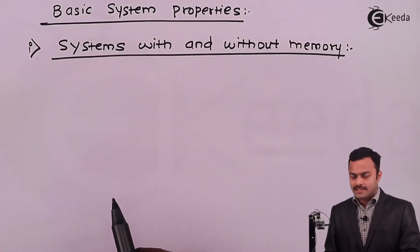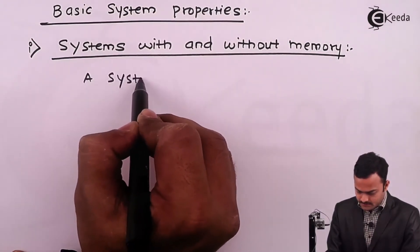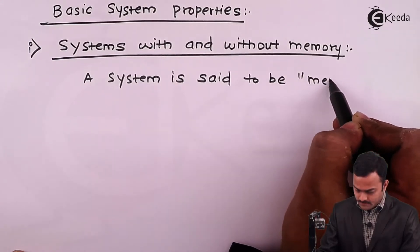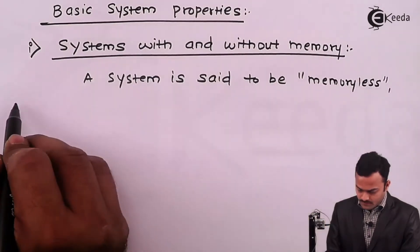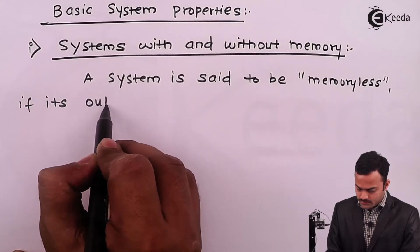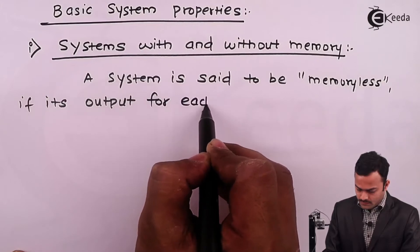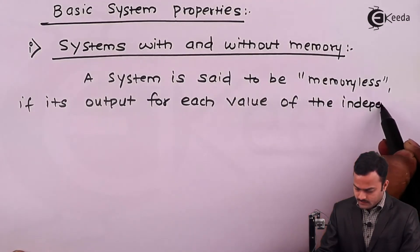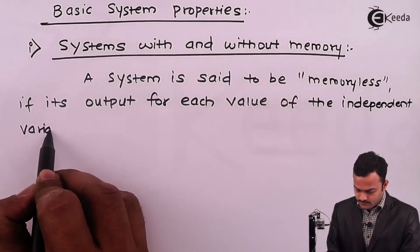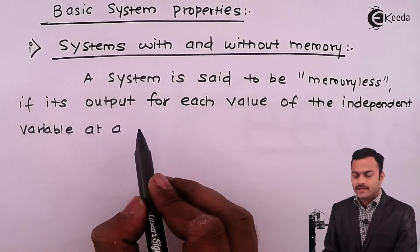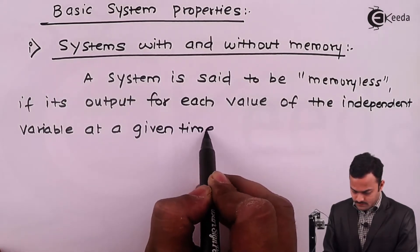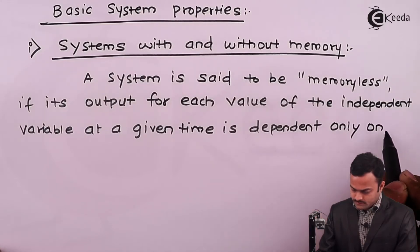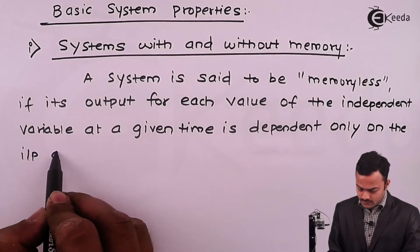Let's define a system which is memoryless. A system is said to be memoryless if its output for each value of the independent variable at a given time is dependent only on the input at that same time.